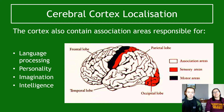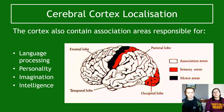The cortex also contains association areas that are responsible for language processing, personality, imagination, and intelligence. You do not need to identify these from a picture, but you do need to know that the association areas have these functions.